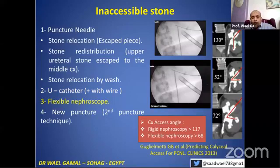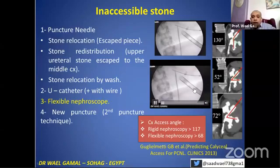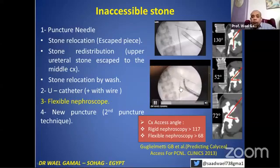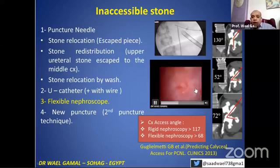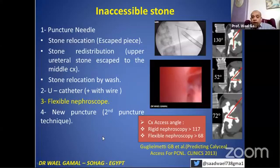Of course, the flexible nephroscope can solve all these problems. However, there are some limitations for the angle. The flexible nephroscope requires an angle not less than 72 degrees. Otherwise you will not be able — in a case like this with an acute angle — to extract the stone with the flexible. Here the flexible is not usable. Here there is a need for a dilated space and an obtuse angle. If it is not able to go to the calyx, you have to dilate it.